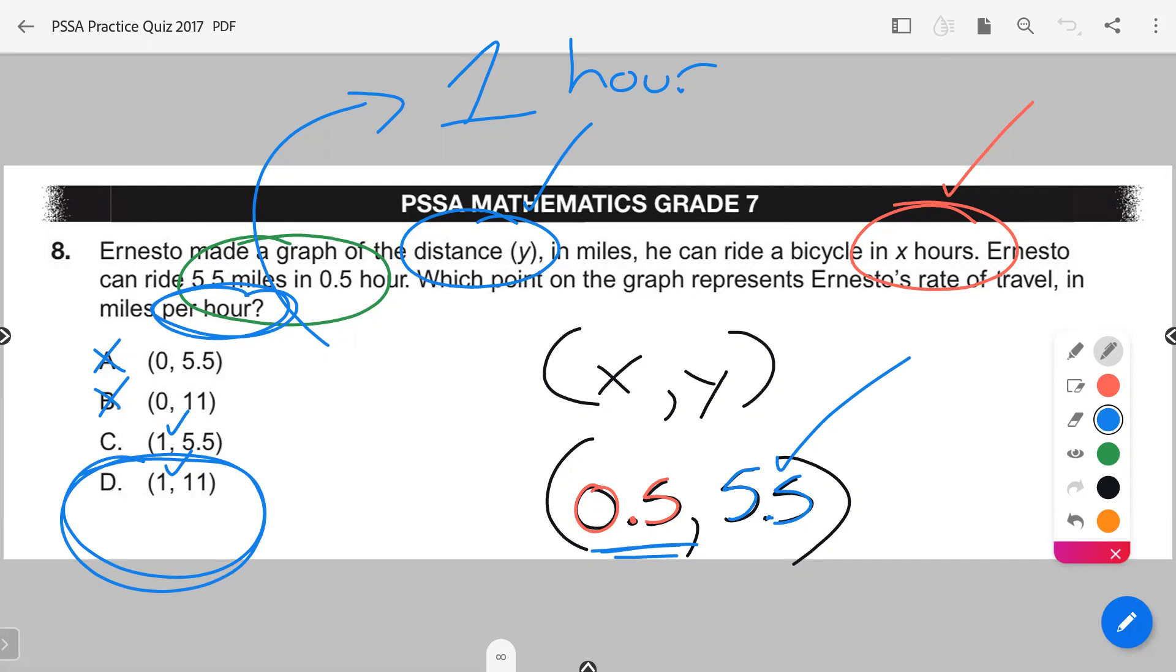So this is identifying what the graph or the point on the graph would represent using x and y's here, and this also relates to that proportional expressions that we have in this unit. I hope you find this here both helpful and informative.